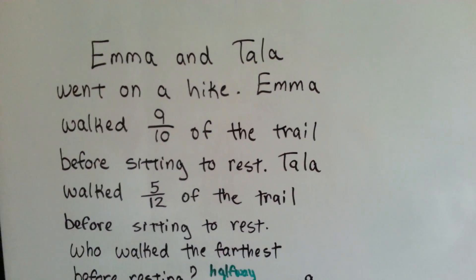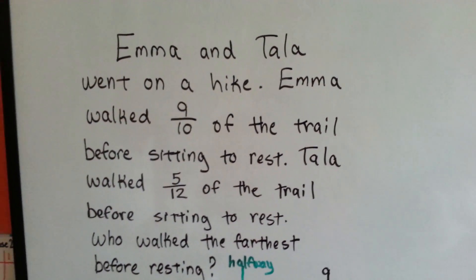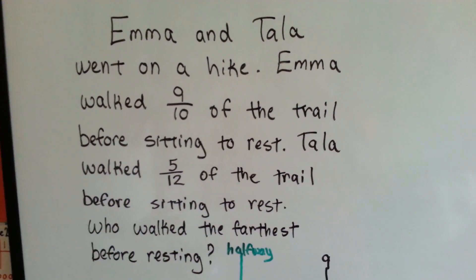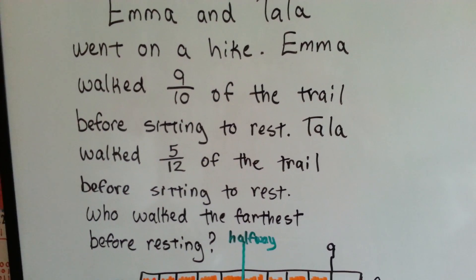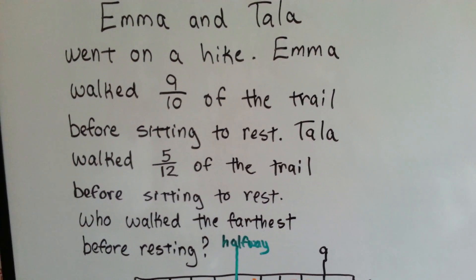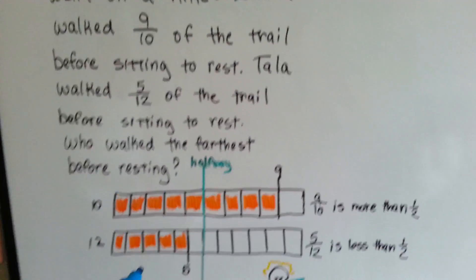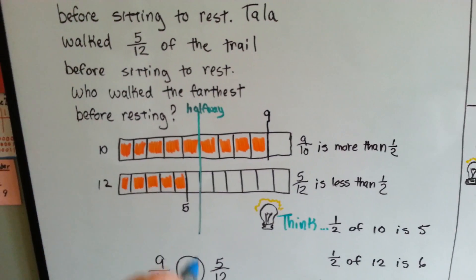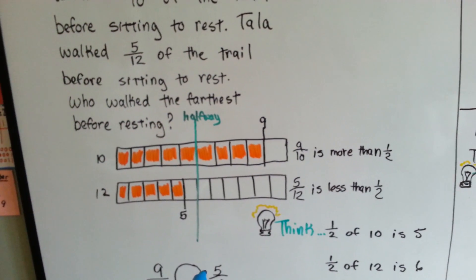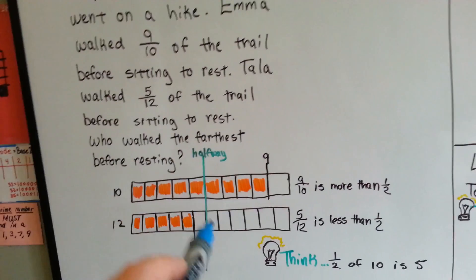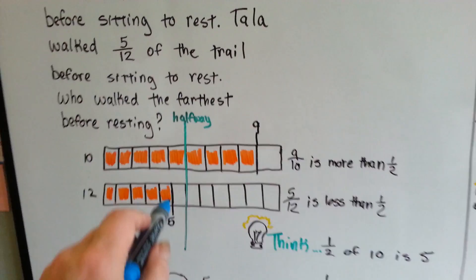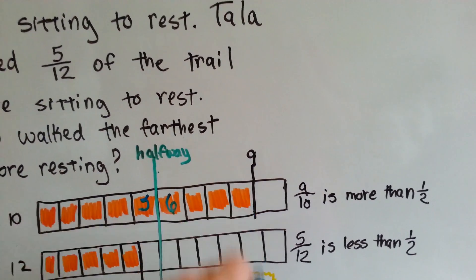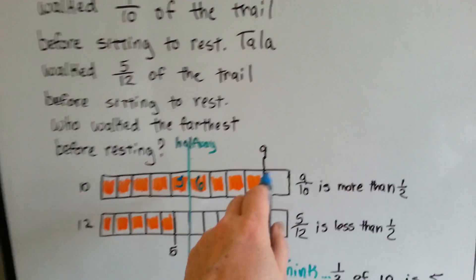Let's take a look at what Emma and Tala are doing. They went on a hike. Emma walked 9 tenths of the trail before sitting to rest. Tala walked 5 twelfths of the trail before sitting to rest. Who walked the farthest before resting? My picture is going to tell you right away who it is, but what we're doing is we're cutting the trail into a halfway mark. Half of the 9 tenths is at the 5 point, right? This is 5, this is 6, 7, 8, 9, see? And she walked 9 tenths.